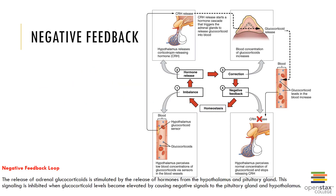Other feedback mechanisms include negative and positive feedback systems. Negative feedback systems produce a physiological response that causes a decrease in hormone release and are most commonly used. Positive feedback systems produce a physiological response that causes an increase in hormone release, and this type of mechanism is rarely used.